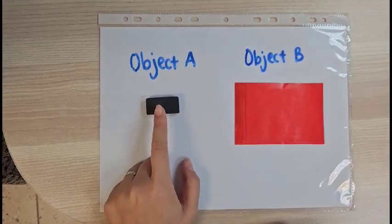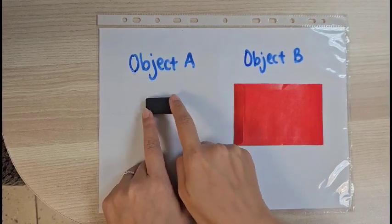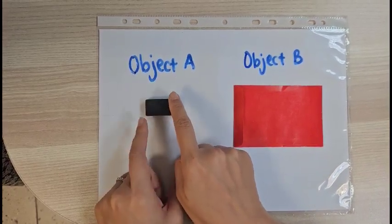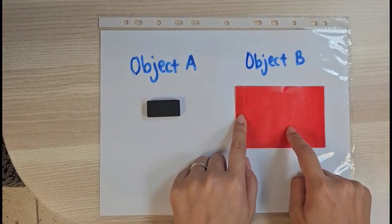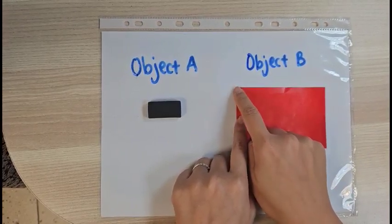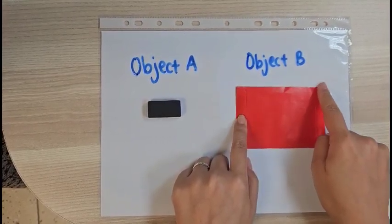Object A, which is an eraser, and I want to measure the length from here to here. And object B is a red packet, which I would measure the length from here all the way to the other end.